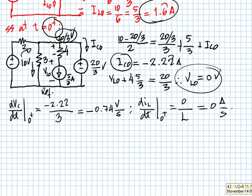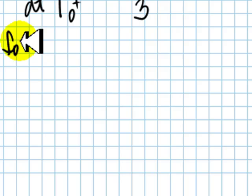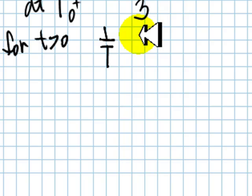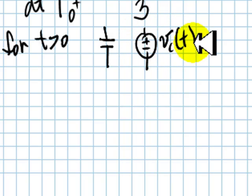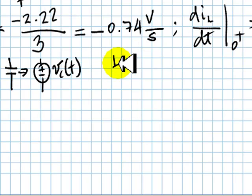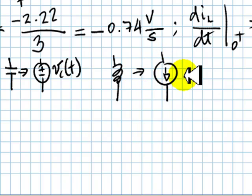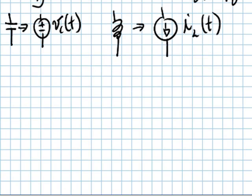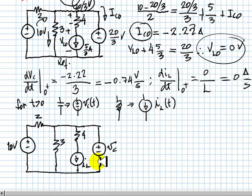Now comes the final part: finding the current in the source at zero plus and its derivative with respect to time, also at zero plus. To do this, I write the source current as a function of currents in inductors and voltages in capacitors. I make a drawing for t greater than zero, representing capacitors as voltage sources whose voltage is a function of time, and inductors as current sources whose current is also a function of time. When we solve for this current, it comes as a function of IL and Vc.